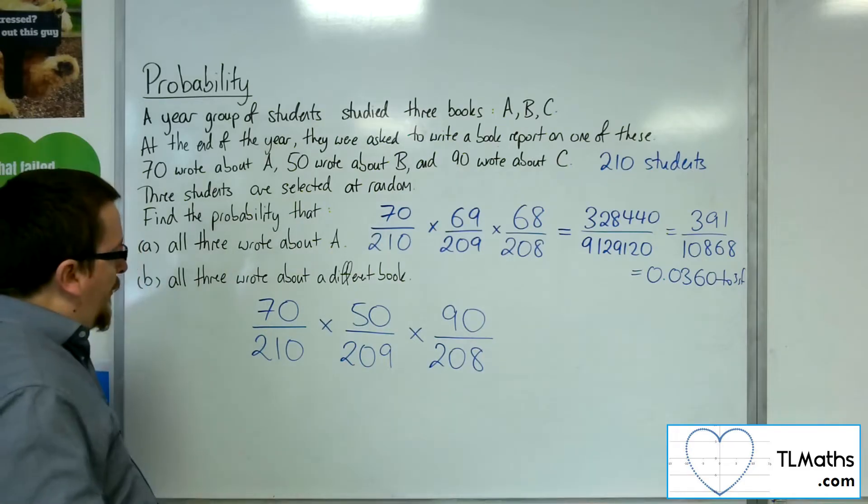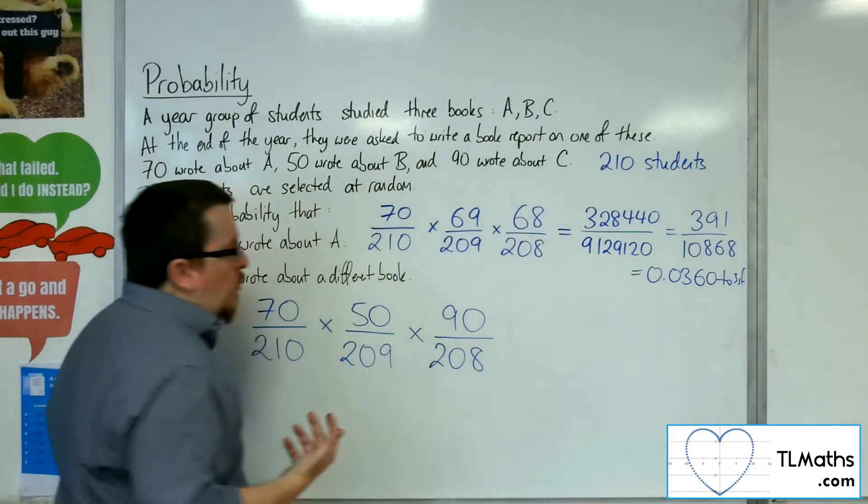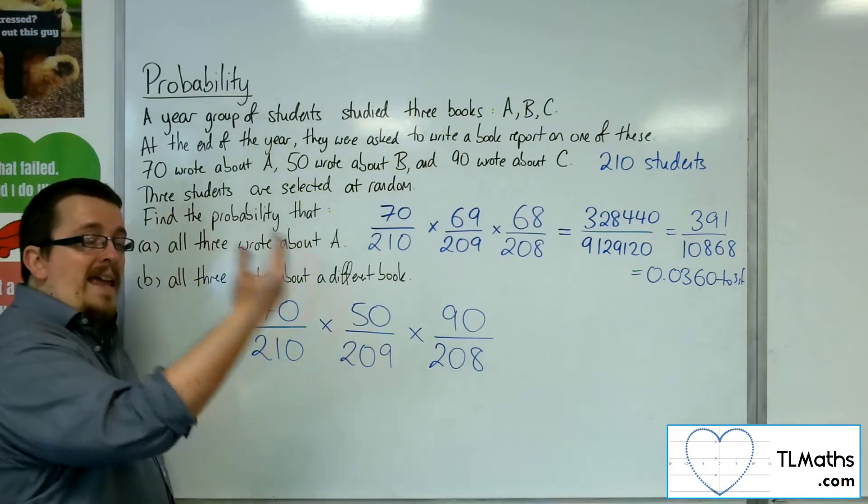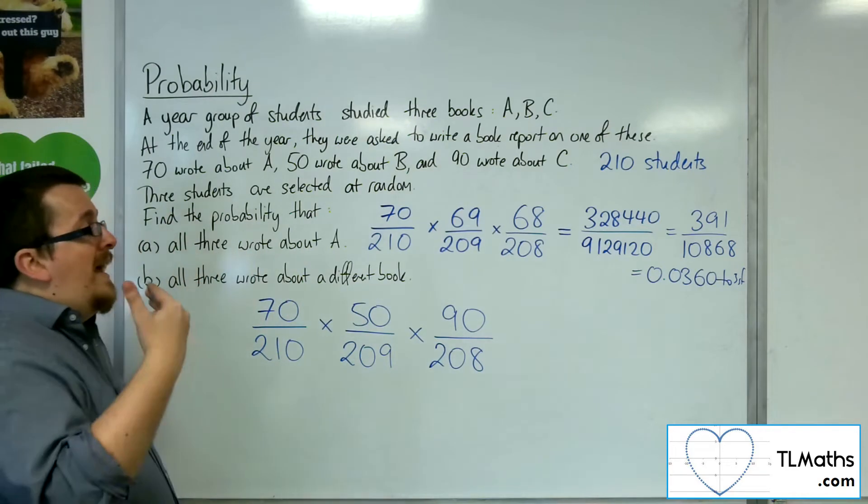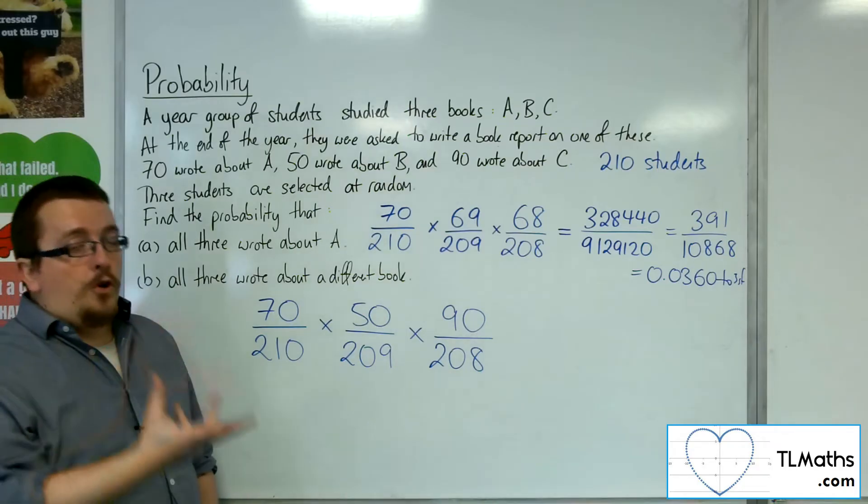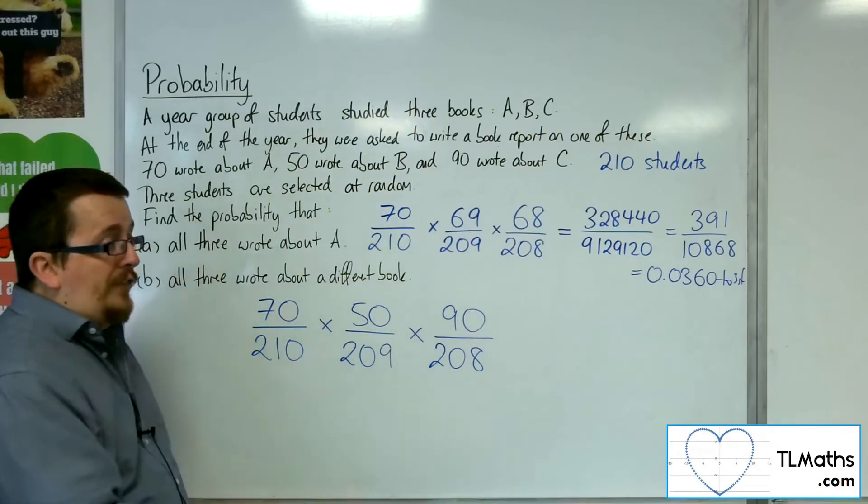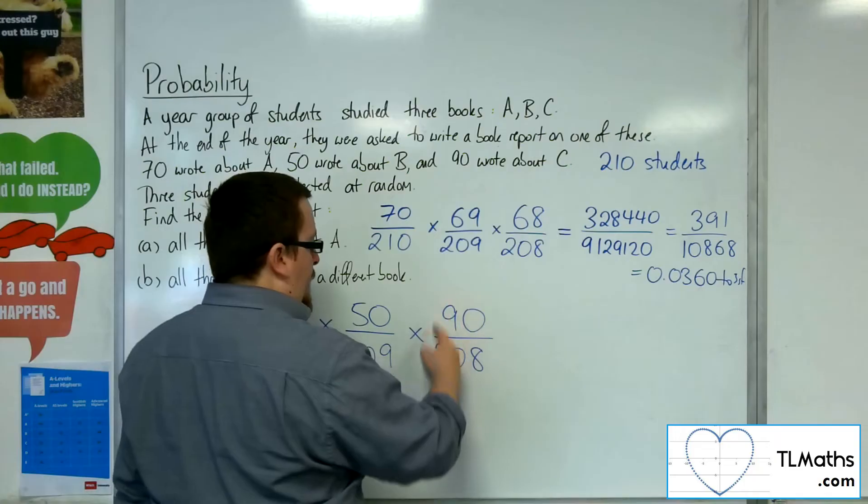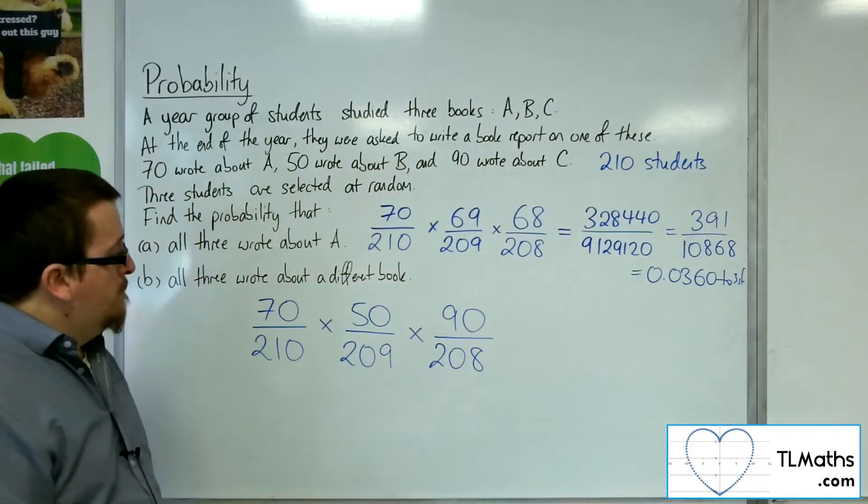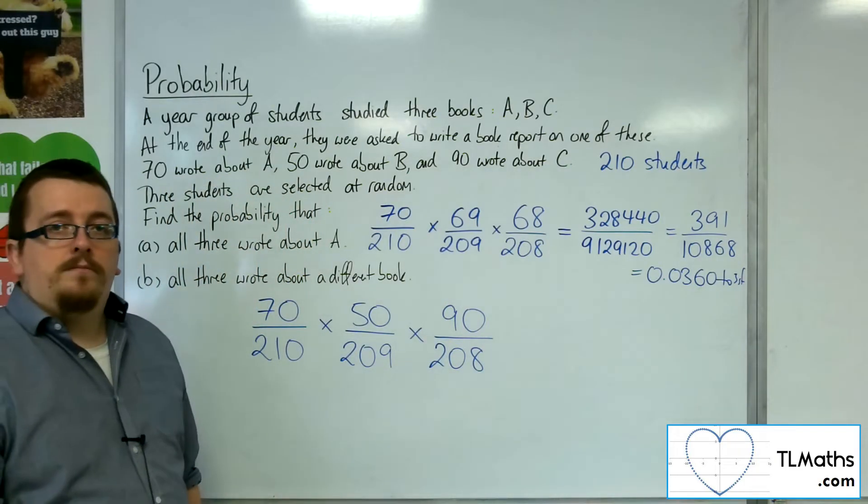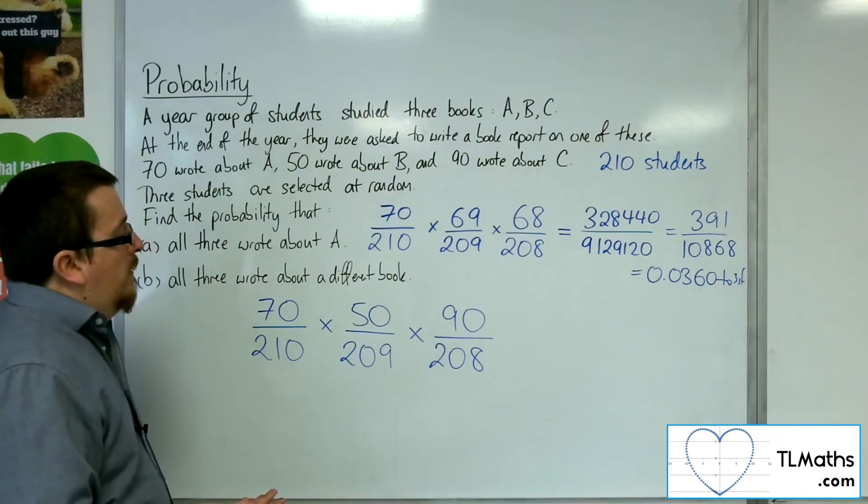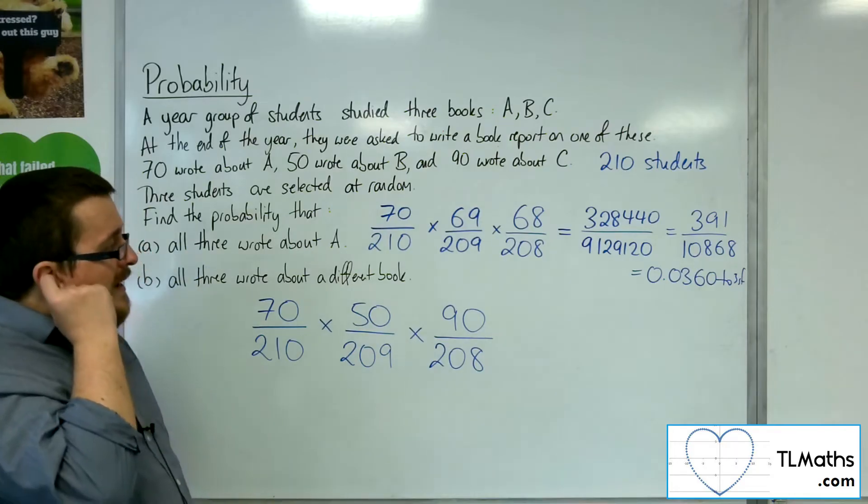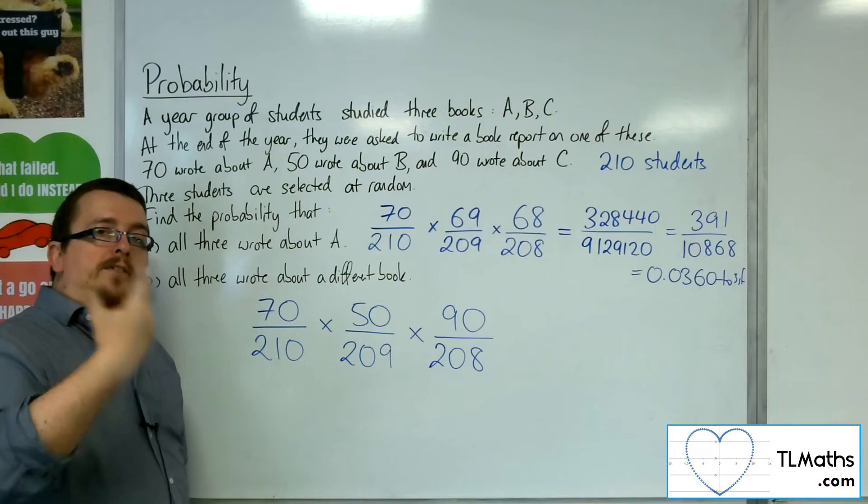Each of these probabilities were based on the order of choice that I made: A, then B, then C. That isn't the only way it could have occurred. I could have had A, then C, then B, in which case I would have had 90 over 209 and 50 over 208. That would be a different series of events. I've got to take account of all of the possible ways that this can happen.